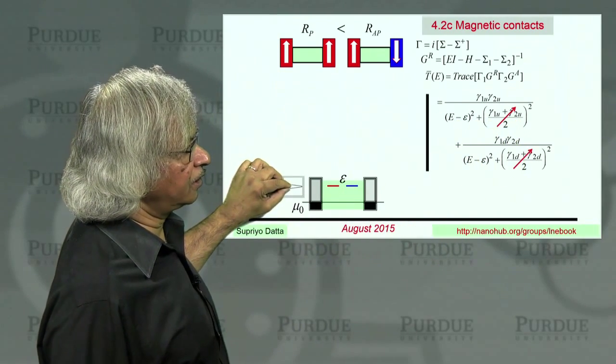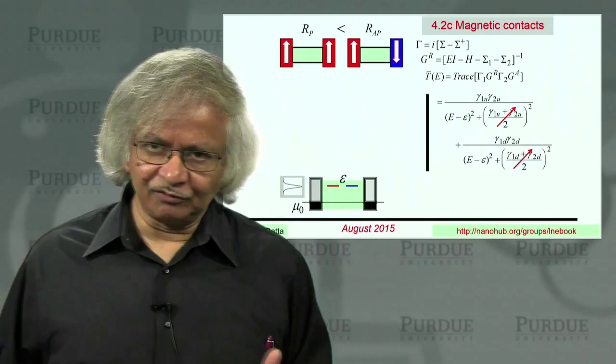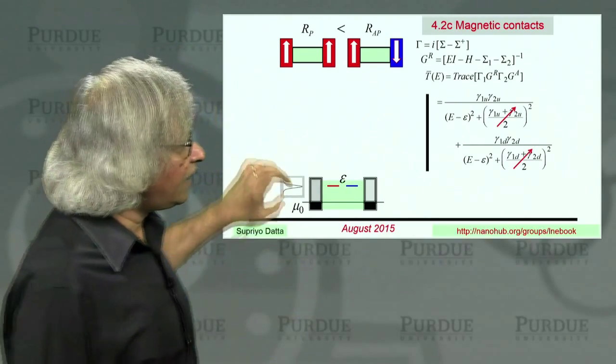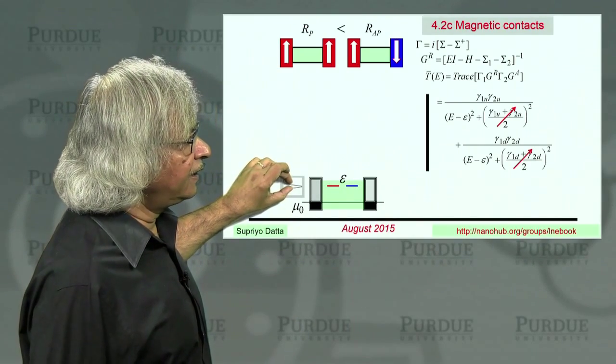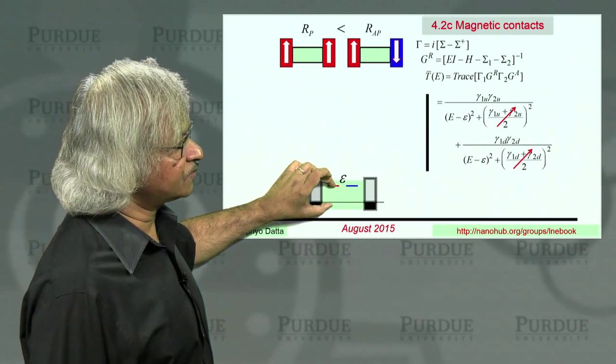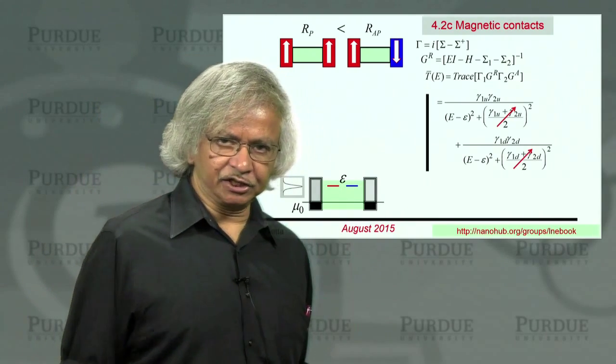And when you calculate this transmission, what you want is the transmission at an energy equal to the Fermi energy. That's at low temperatures. So that's this equilibrium electrochemical potential. And what we are assuming is that we can drop these two terms in the denominator. So when can you assume that? Well, if this happens to be much less than that. So what does this represent? Well, this represents the broadening of the level.